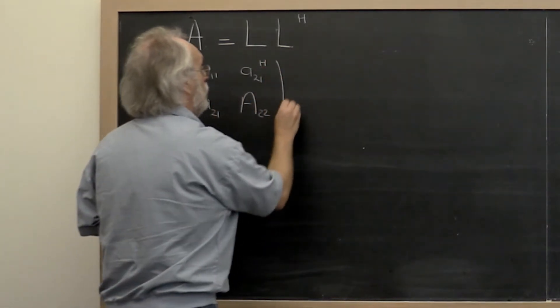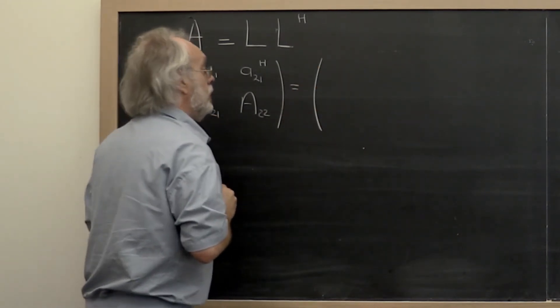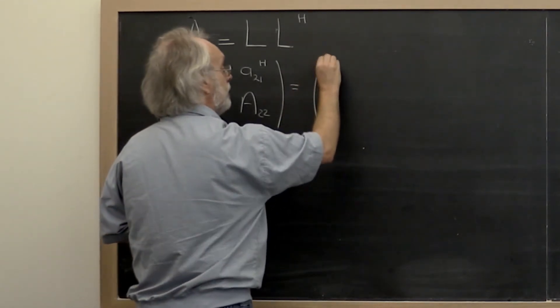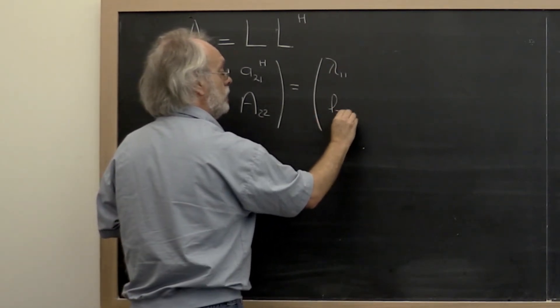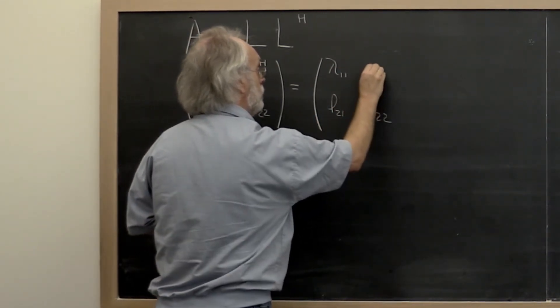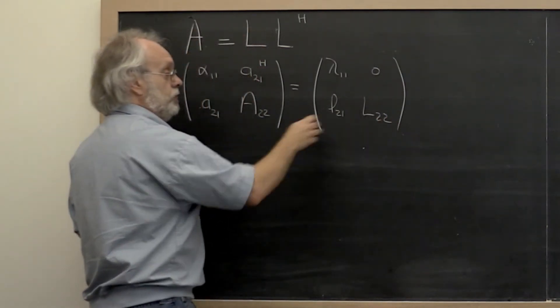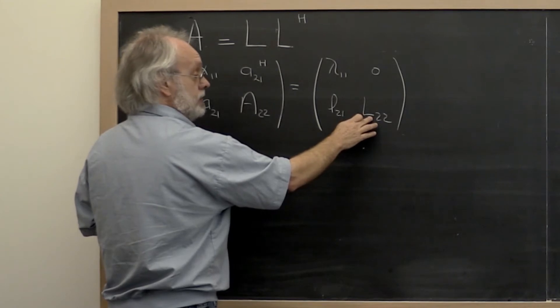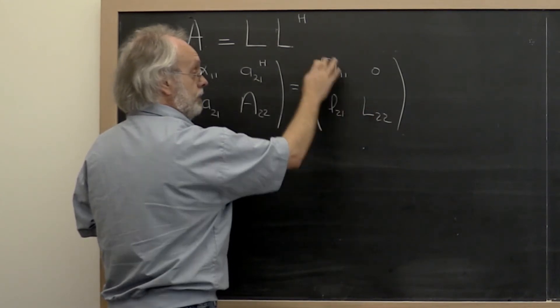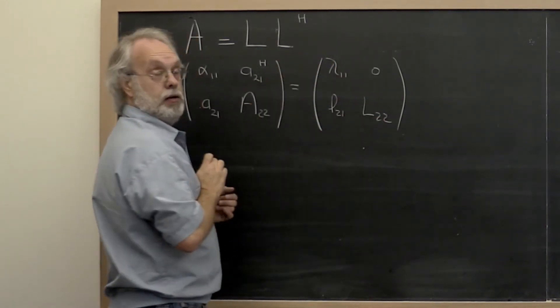So then we go and we partition L. Now L is not necessarily unit lower triangular. So we have to expose the element lambda_1,1 and then L_2,1 and L_2,2 with a 0 here. And if we do that, notice that L_2,2 is itself a lower triangular matrix if it's part of this lower triangular matrix.